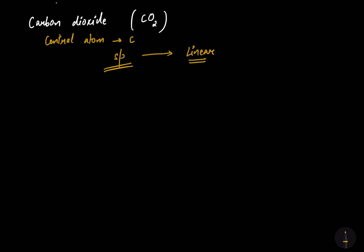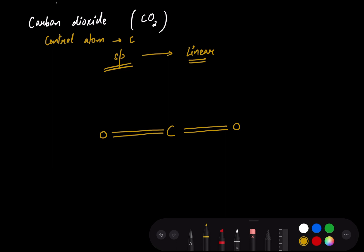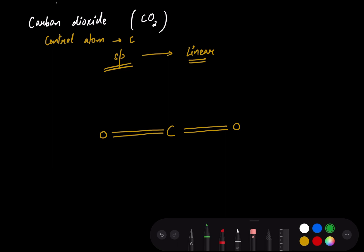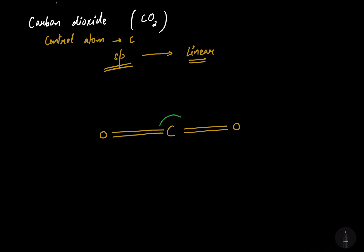Let's make the linear structure of carbon dioxide. That's our carbon, that's the double bond O, and that's the another double bond O, with a bond angle of 180 degrees.